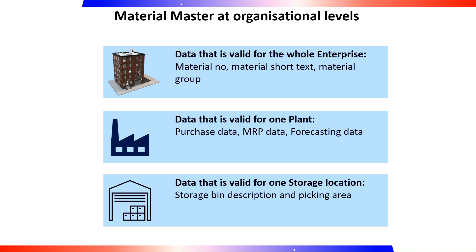Material data is distinguished in the structure in the following ways. Data at client level: general material data valid for the whole company is stored at client level. Examples of client level data include material number, material description, material group, base unit of measure, weight, and volume. Data at plant level is specific to a particular plant. Data at storage location level covers all data valid for a particular storage location.